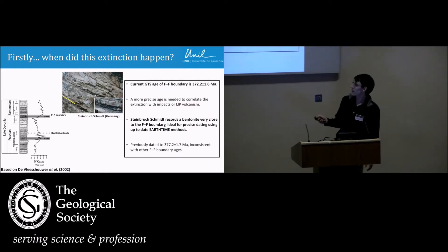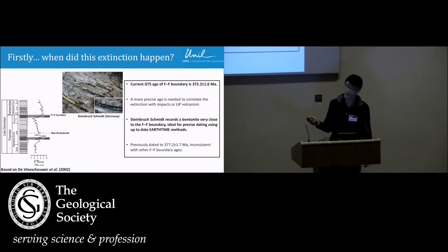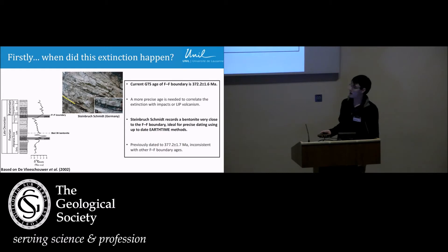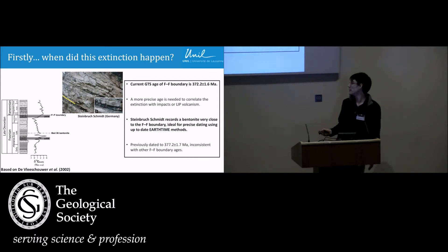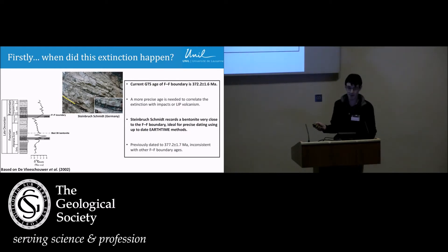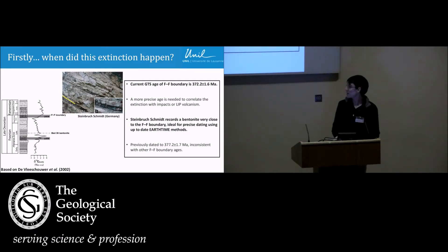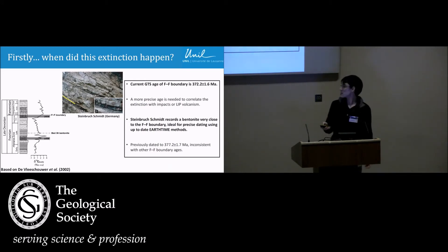So we went back to Steinbruch Schmidt, where there is a lovely bentonite between the two Kellwasser horizons, very close to the Frasnian-Famennian boundary and the extinction — ideal for telling us how old the extinction is. We are not the first to have had this idea. About 15 years ago, Bernard Kaufmann also dated this bentonite and got an age of 377.2 plus or minus a couple of million years — still fairly imprecise, and inconsistent with ages from other methods more recently. So we went back last year and resampled it to use more up-to-date EARTHTIME methods in Geneva to get a more precise and accurate date.